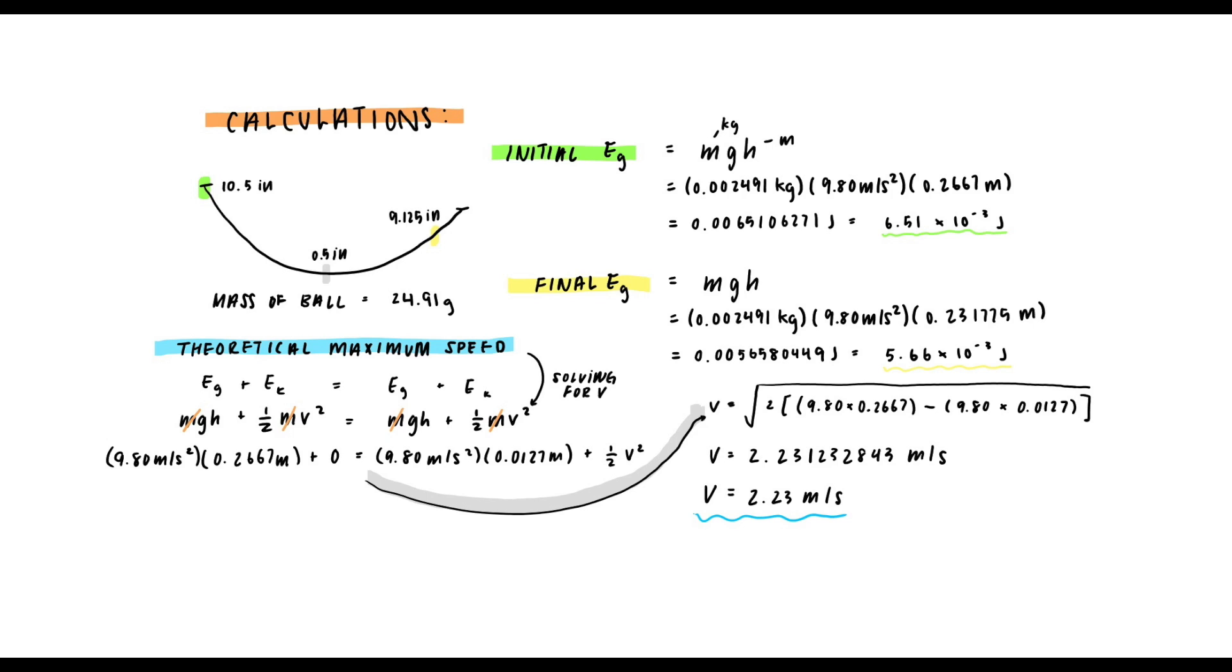The theoretical maximum speed calculated here is only theoretical, hence theoretical maximum speed, because we assume that all the gravitational potential energy that the ball has at the very start would be conserved and that it would transfer into kinetic energy by the time it reaches the bottom of the ramp, which is what we calculated here. And that's not the case in real life because obviously some of that gravitational potential energy that it starts with is lost through, for example, sound and air resistance.